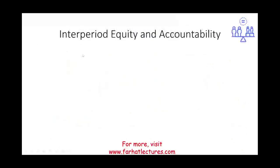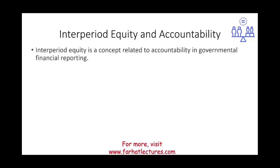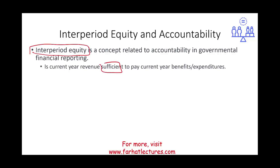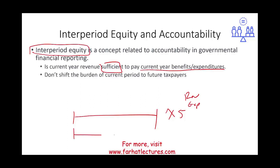An important concept related to accountability is inter-period equity. Simply put, we want to see if the current year revenue generated by a governmental entity is sufficient to pay the current year benefits or expenditures. For example, in year 20X5, whatever revenue we generate in 20X5 should cover the expenses for 20X5. We don't want to shift any expenditure from year five to year six, because that shifts the burden of the current period onto future taxpayers.